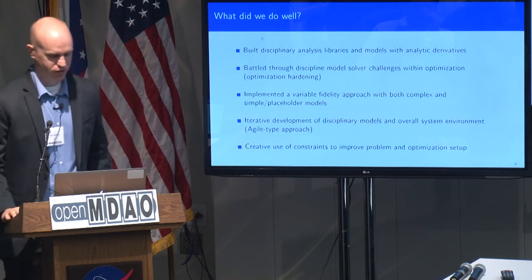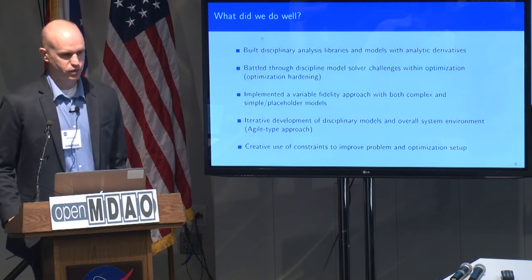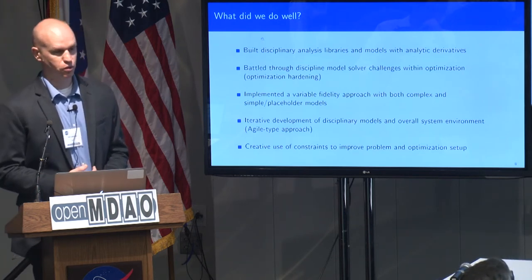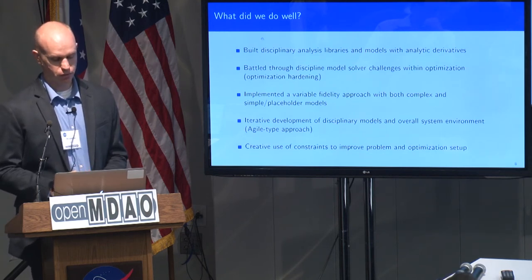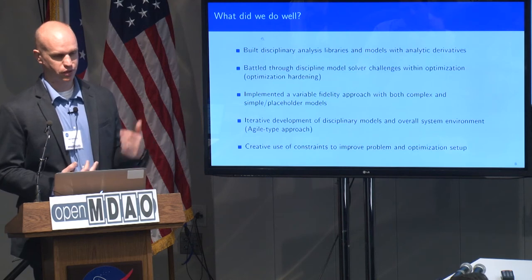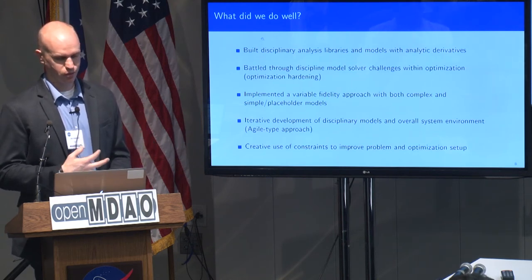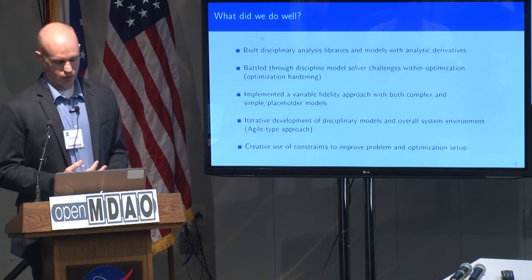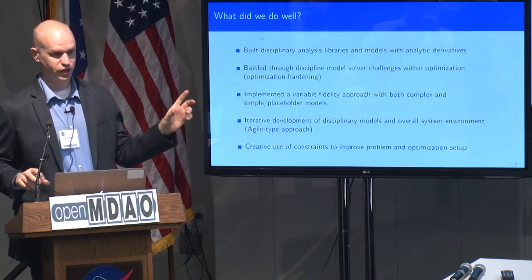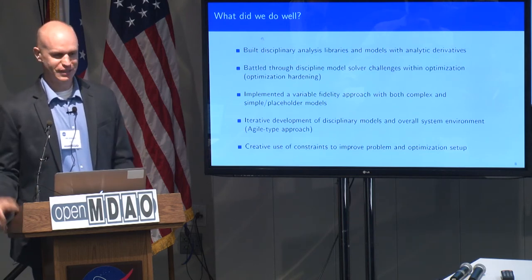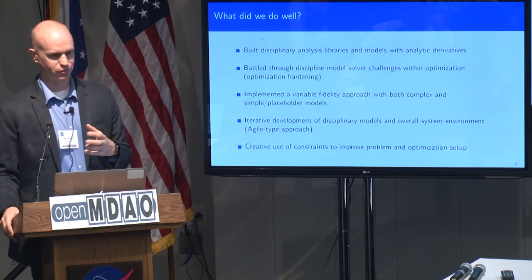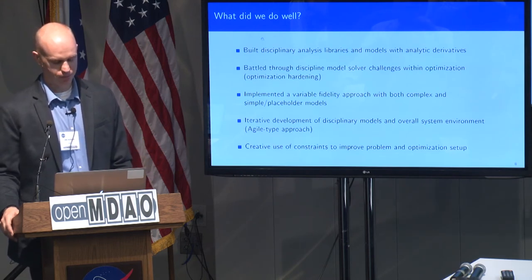Getting into what we felt like we did well: we built all of our analyses, libraries, and models to use analytic derivatives. That was key to making this whole process work because it really allowed our optimization to work quickly to get to solutions. Our most complicated models — especially with the gas turbine in there — are really challenging. Those are taking on the order of a day to solve. The team also battled through a lot of model setup and challenges where we had solvers in all these different disciplinary models, and the optimizer would throw random variables at it that would sometimes break it. So we had to battle through an optimization hardening process where each discipline had to be robust enough to handle any inputs the optimizer would throw at it.